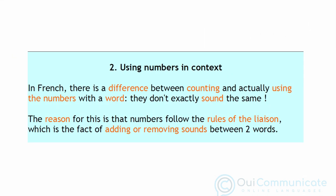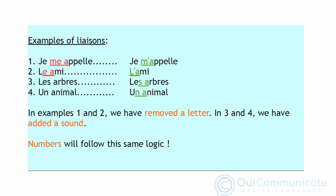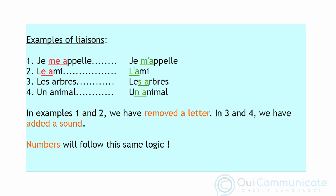Before going any further, it's important to know that there is a difference in French between counting alone and using the numbers next to a word — they don't exactly sound the same. The reason for this is that numbers follow the rules of the liaison, which is the fact of adding or removing sounds between two words. As a reminder, here are some examples of liaisons: 1) 'je me appelle' becomes 'je m'appelle'; 2) 'le ami' becomes 'l'ami'; 3) 'les plus arbres' becomes 'les arbres'; 4) 'un plus animal' becomes 'un animal'. In examples 1 and 2 we've removed a letter, and in 3 and 4 we've added a sound.